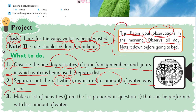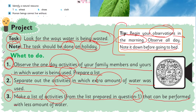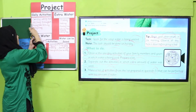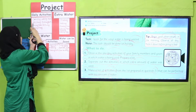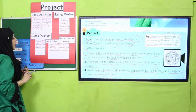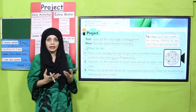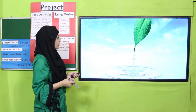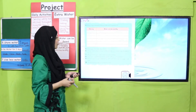Step three: make a list of activities from the list prepared in question one that can be performed with less amount of water. From your step one list, identify which activities can be done using less water, such as watering the plants, cleaning the dishes, and drinking.